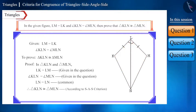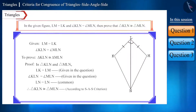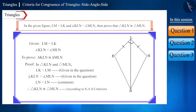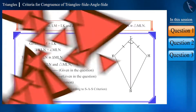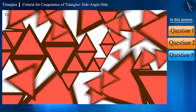While writing congruent triangles, write their names in the same order in which their sides and angles have one-to-one correspondence, or in the order in which they are congruent to each other. Let's move to the next question.